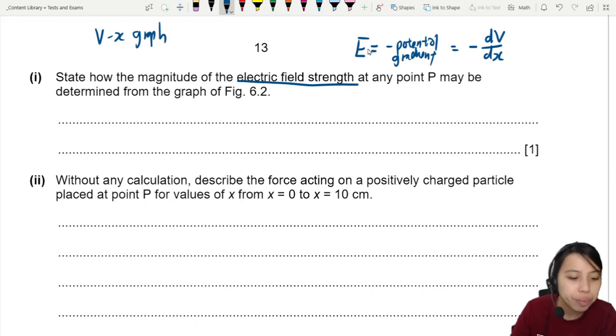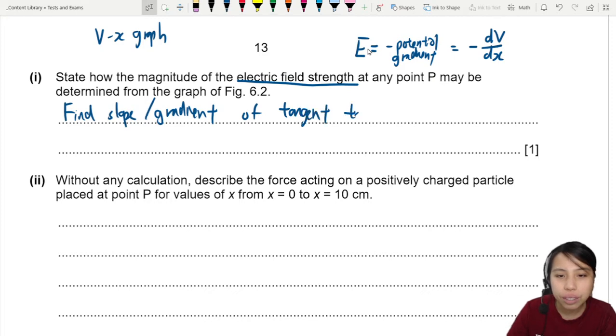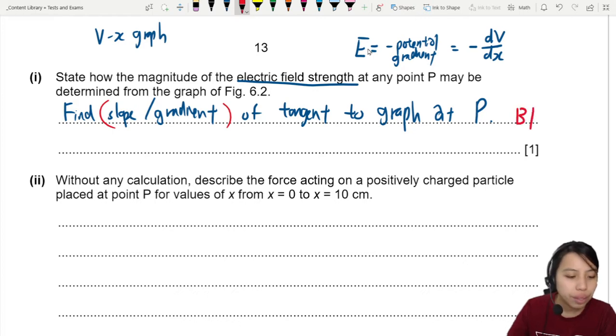So negative, sometimes we call it dV/dx. So if you have a V-x graph, you'll find the gradient that will give you the potential. So we can say find gradient, find gradient of the tangent. So we can say find the slope or gradient of tangent to the graph at P. So I'm looking for the idea of slope, gradient of tangent or graph or line or curve. Whatever there is, I'm looking for the idea.